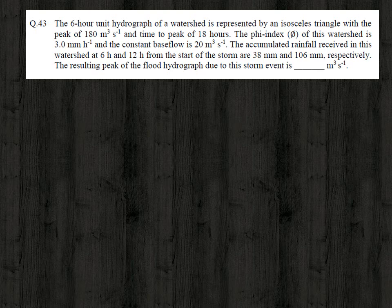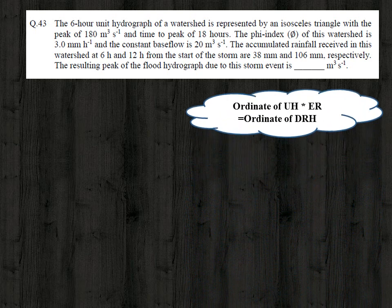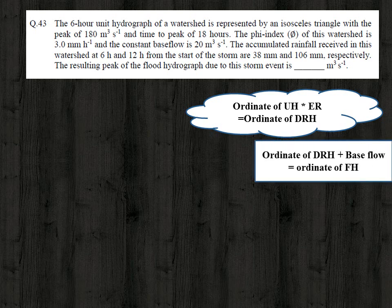To solve this problem we use the relationship: ordinate of unit hydrograph × effective rainfall = ordinate of direct runoff hydrograph. Then, ordinate of direct runoff hydrograph + base flow = ordinate of the flood hydrograph. The peak discharge of the six-hour unit hydrograph is given as 180 cubic meter per second.